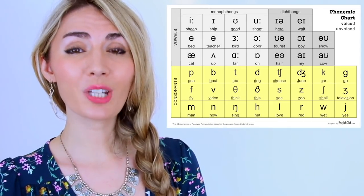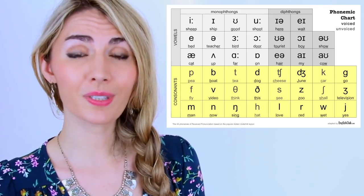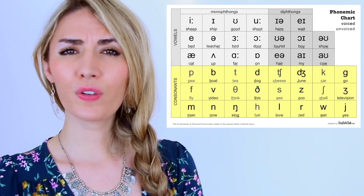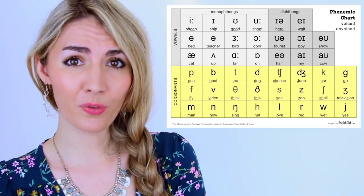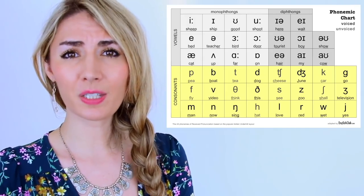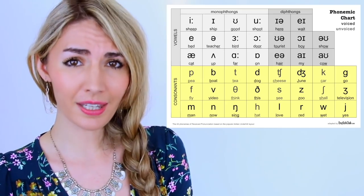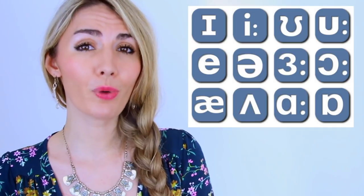The phonemic chart is made up of 44 phonemes — 44 sounds in the English language. The phonemic chart is not the same as the letters of the alphabet, although some of them look similar. These are symbols for sounds, so don't mistake them for letters. Today we're going to look at all the monophthongs — the pronunciation of all the monophthongs.